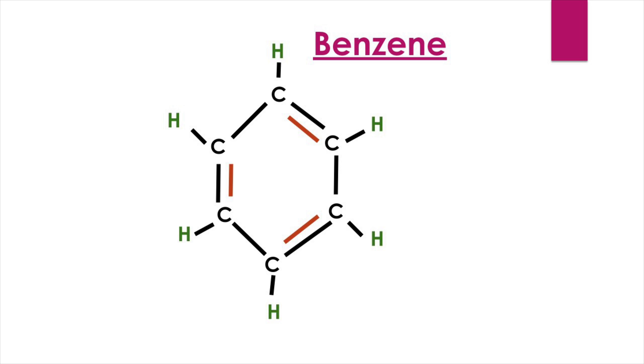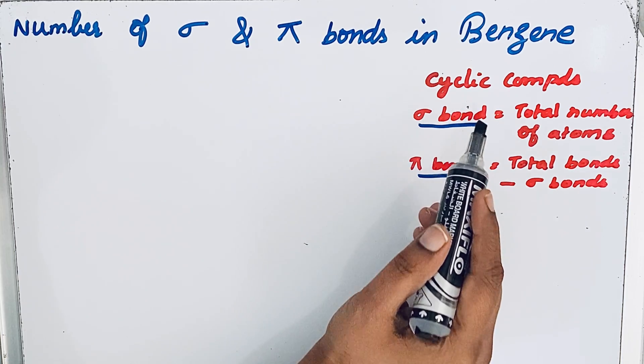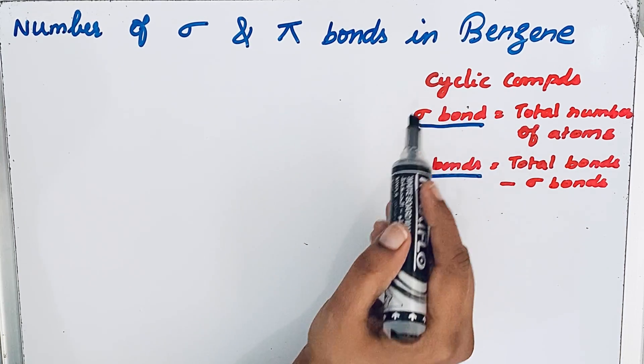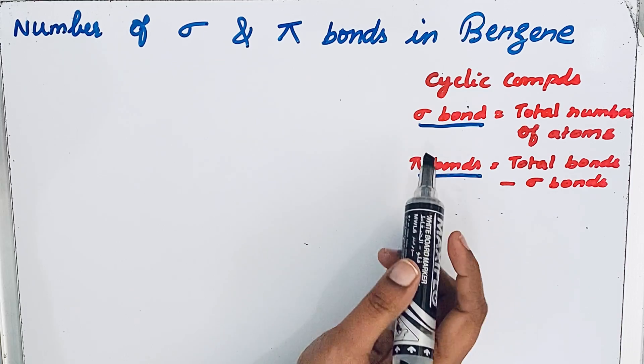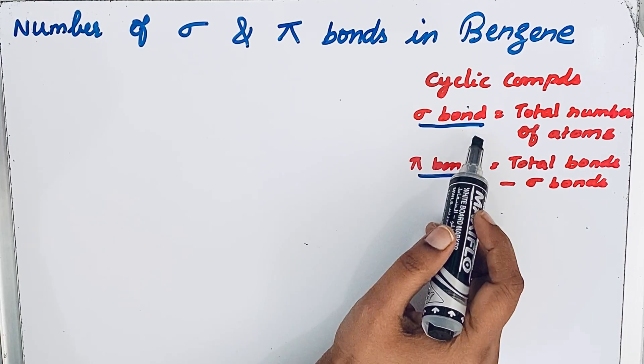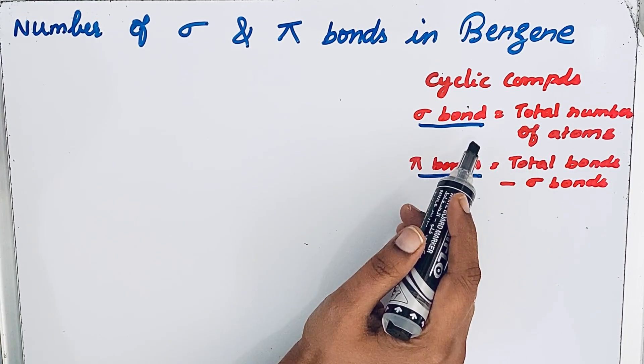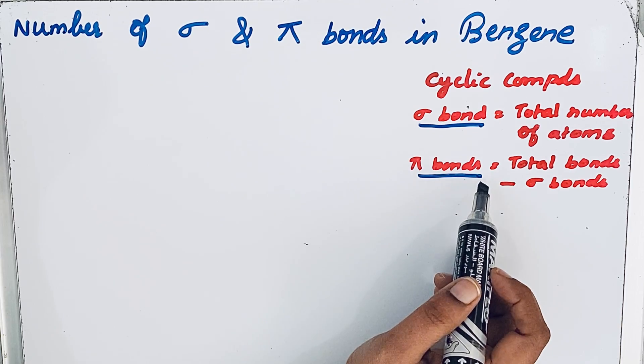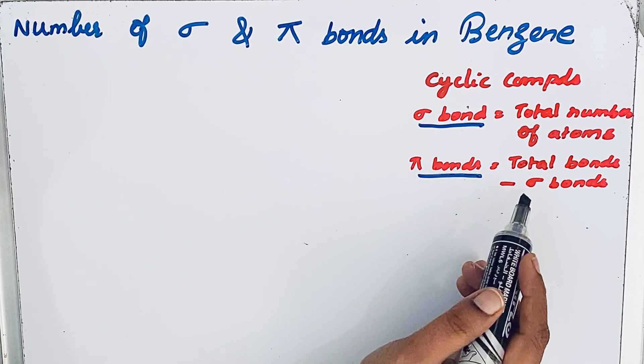We have a simple formula to find the number of sigma and pi bonds if a molecule is cyclic. Benzene is a cyclic compound, so let us see that formula first. Sigma bond equals total number of atoms. Pi bond equals total number of bonds minus sigma bonds.